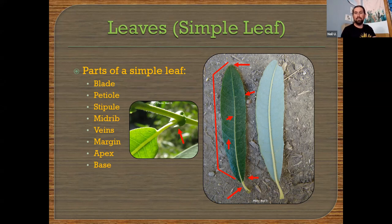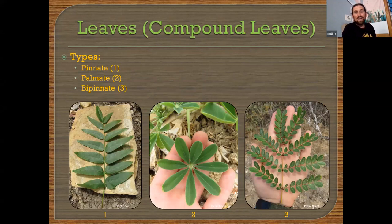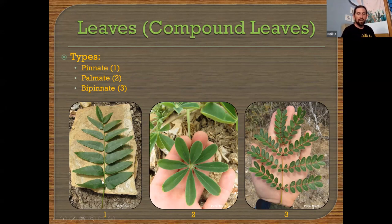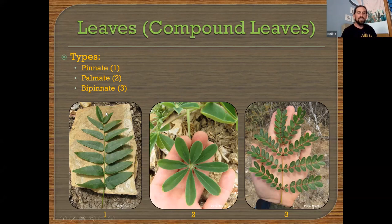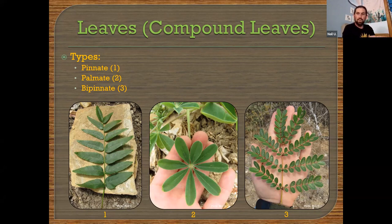That's a simple leaf — just one continuous blade. But leaves can become compound leaves when they get more complex. Our first compound leaf type is the pinnate leaf. You have the same parts — a petiole at the bottom and a midrib going up — but instead of the leaf being completely together, it's broken up into segments called leaflets. They have their own venation with a secondary midrib. This whole structure is just one leaf. These individual segments running up the sides are leaflets, all attached to that central midrib, which traces down to a petiole attaching to the stem.